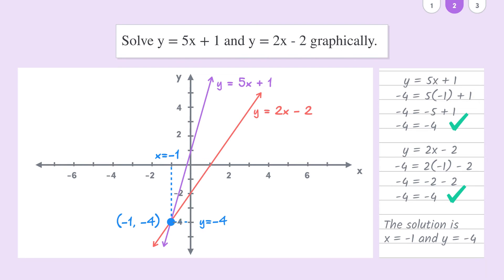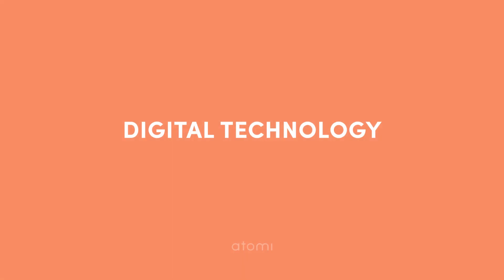So in short, if we're trying to solve a pair of simultaneous equations by using a well-drawn graph, all we need to do is look at the intersection of the two lines and figure out what the x and y values are at that point. Short, simple, and sweet. Now you may notice that this syllabus dot point mentions using digital technology to graph and solve simultaneous equations.